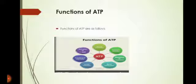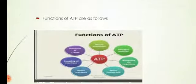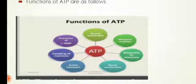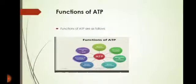Next, the functions of ATP: ATP performs functions in our body such as muscle contraction, precursor of cAMP, coupling of reactions, active transport, nerve conduction, biosynthetic reactions, and as an allosteric modifier. These are all the functions of ATP.